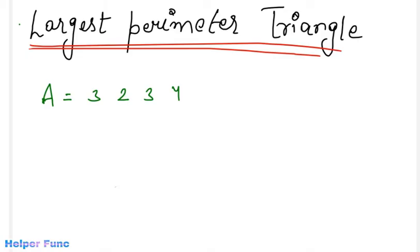Now another thing that we can do is we can sort this array. Let's say we sort this array and thus the new array we get is this. Now we will be comparing the largest three sides.